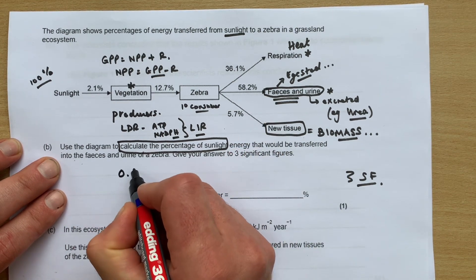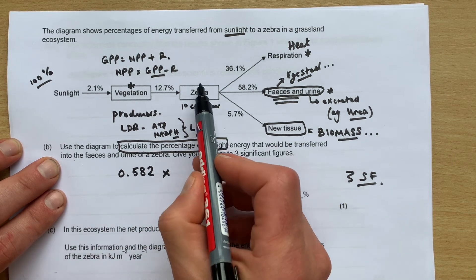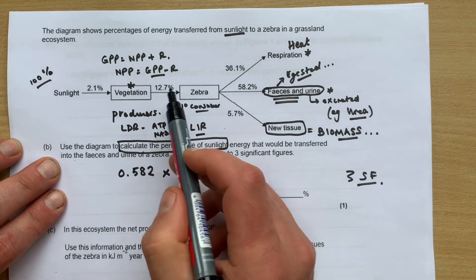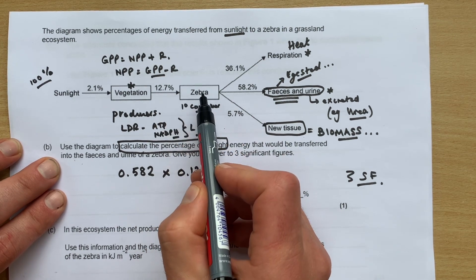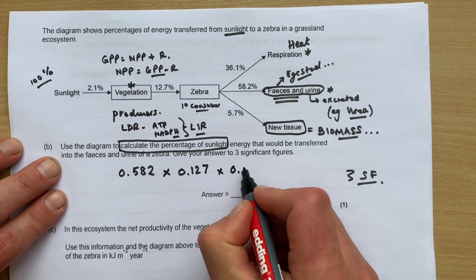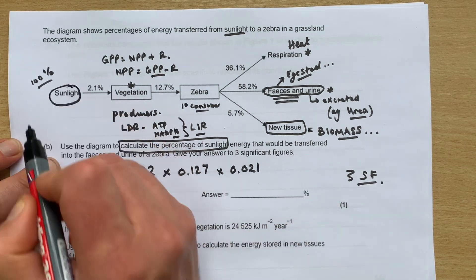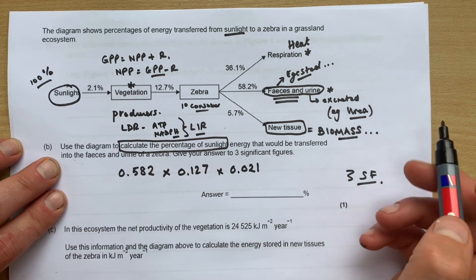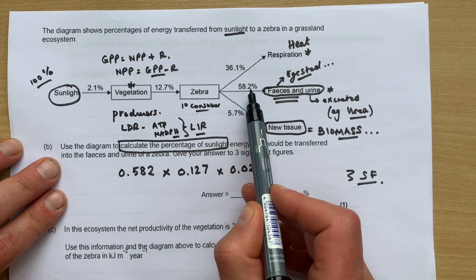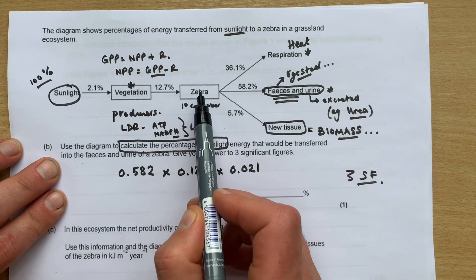So percentage then - it's 58.2 percent, so we'll do that as a decimal times the energy here which was 12.7 percent that was consumed by the zebra, and that is 2.1 percent of the total light that shone down on the vegetation. So you're basically working your way back as a percentage. 58.2 percent of energy in the faeces and urine was from the zebra.